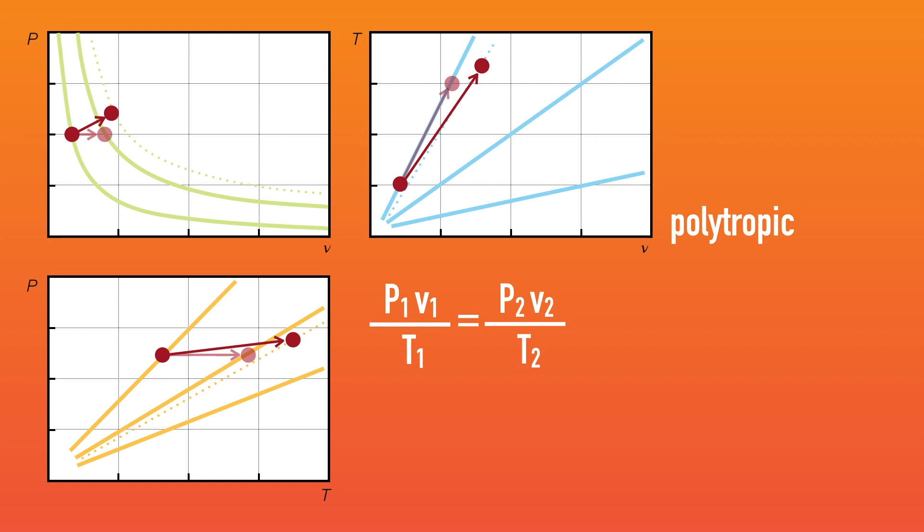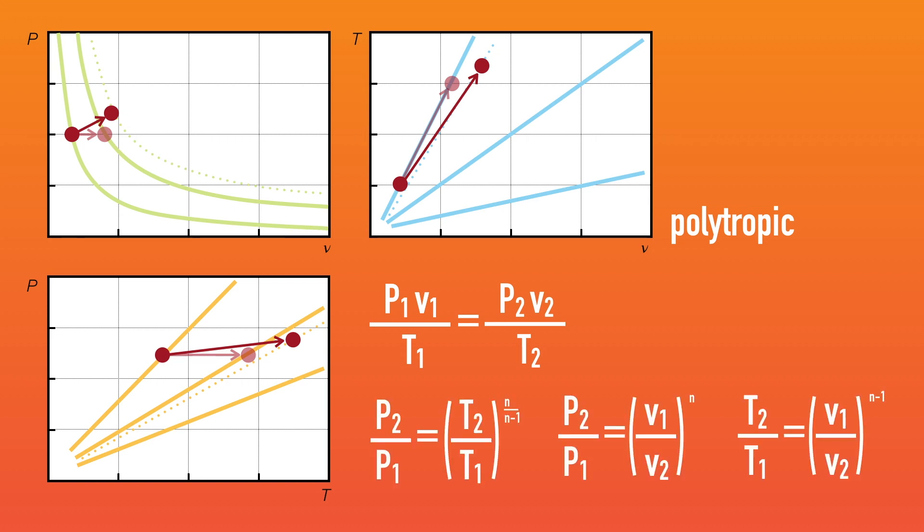Here we have too many unknowns in the given equation. Instead, we use polytropic relationships to predict changes in properties during processes. You can now see how this simple model of gases is so useful in predicting gas behavior.